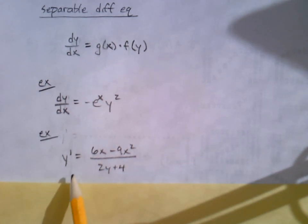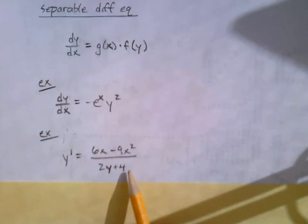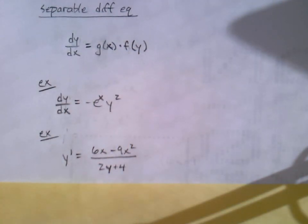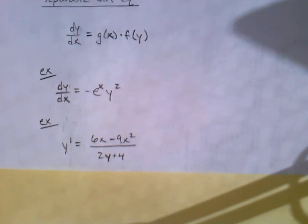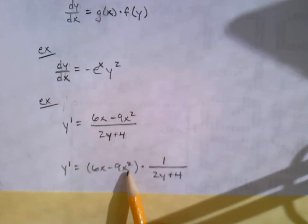Here's another one, this time called y prime. Six x minus nine x squared divided by two y plus four. You're like wait, I see the x's and the y's, but you're supposed to be taking a product, this is divided. Well, you could think of it as six x minus nine x squared times one over two y plus four. Now you've got a function of x multiplied with a function of y, and it's separable.